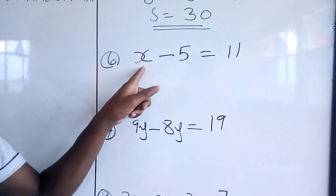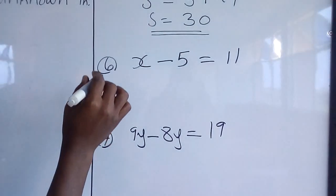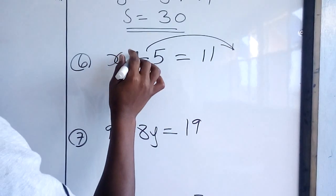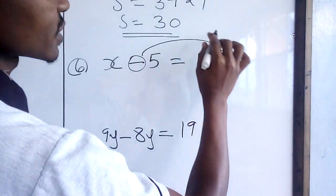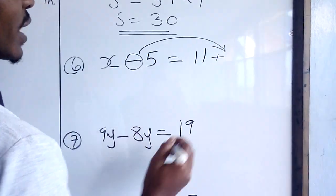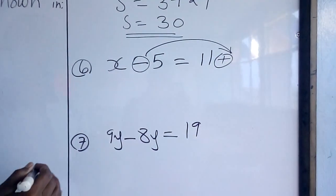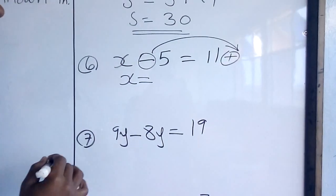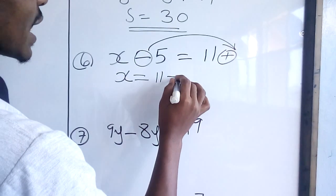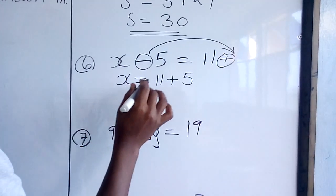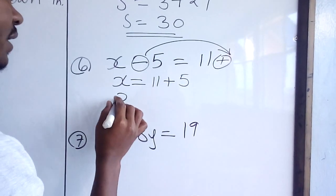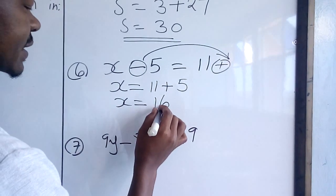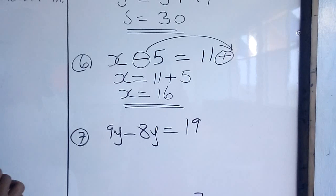Let us look at this other one. We have S minus 5 is equal to 11. What are we supposed to do? Take this 5 to the other side. This negative sign, if it crosses the equal sign, it becomes a plus. Therefore, we are going to be left with X on the left hand side is equal to 11 plus 5. Then we solve: 11 plus 5. We have X being equal to 11 plus 5, we get 16. Therefore, that is the value of X.